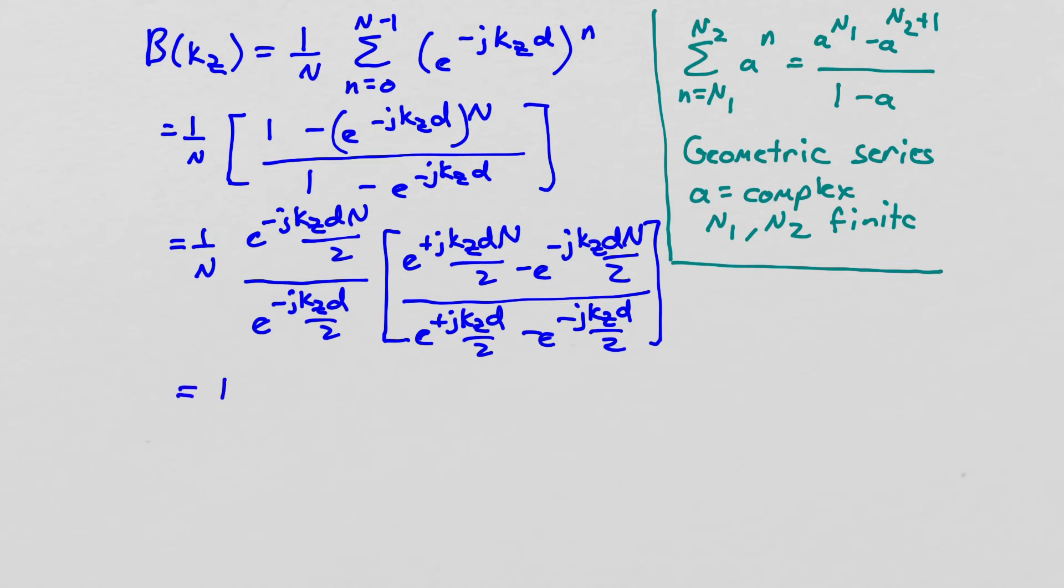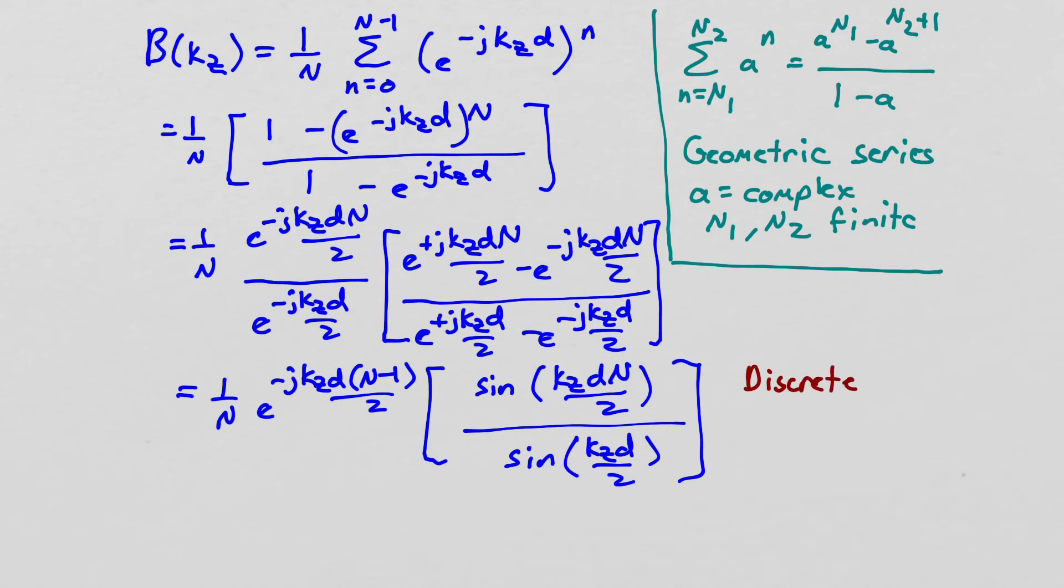So what I'm left with is 1 over n e to the minus j kz d n minus 1 over 2, that's putting these two together. And then I end up with sine of kz d n over 2 over sine of kz d over 2. And if you've worked at all with digital signal processing before, you recognize this as the discrete version of the sinc function.